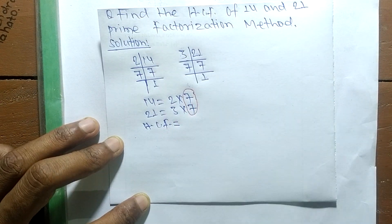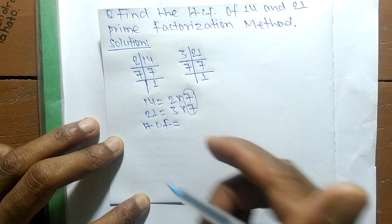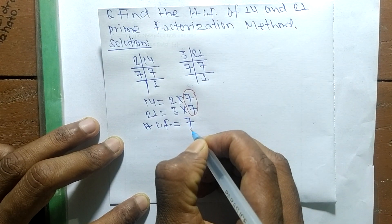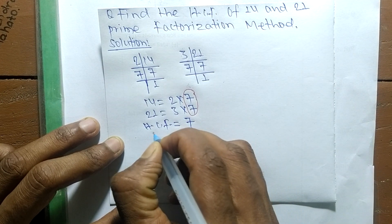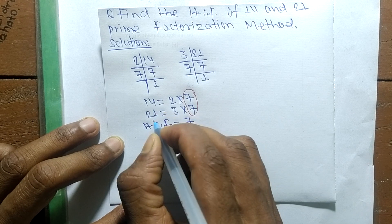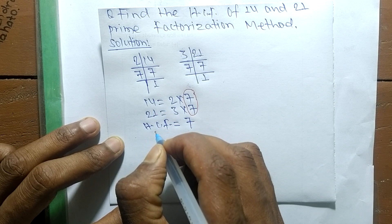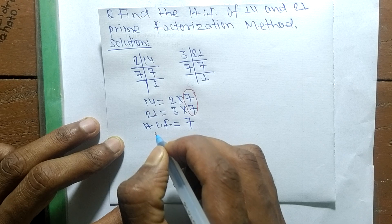So its HCF is equal to 7. So 7 is the highest common factor of 14 and 21. So this much for today and thanks for watching.